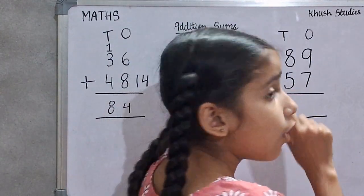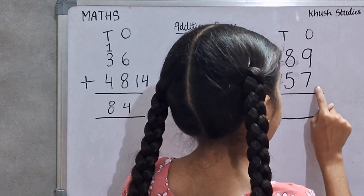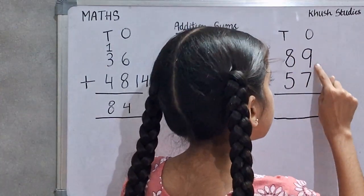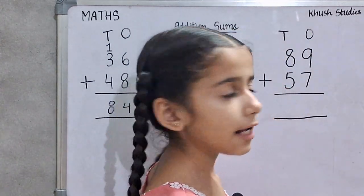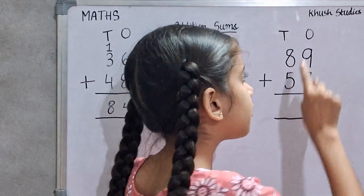Now, 8 tens 9 ones, 89. 5 tens 7 ones, 57.